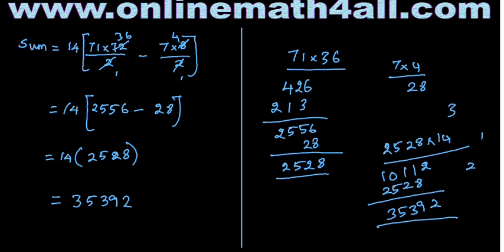The sum of all numbers between 100 and 1000 which are divisible by 14 is 35392. That is the answer. I hope students will be able to understand and do this kind of problem in competitive exams and other exams. For more videos like this, please visit www.onlinemathforall.com. Thank you.